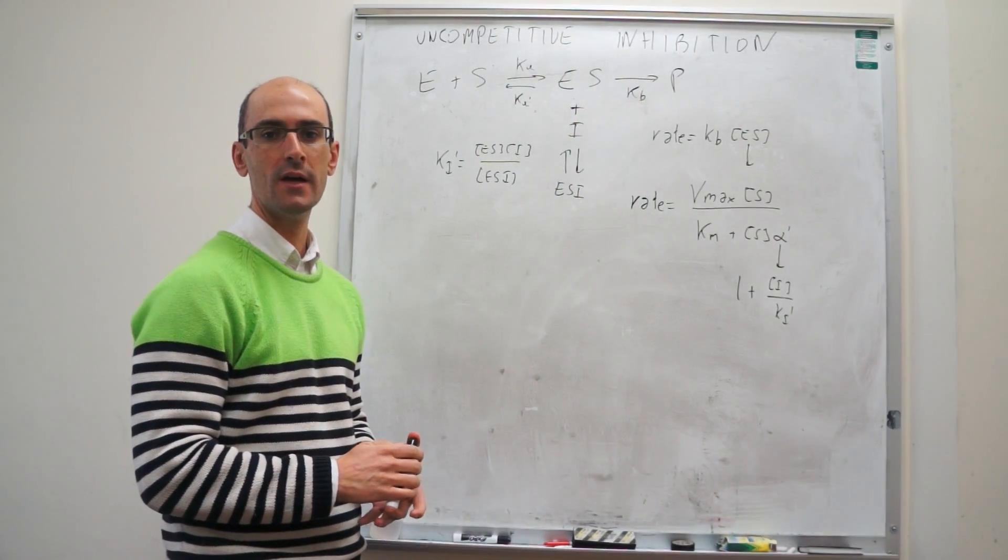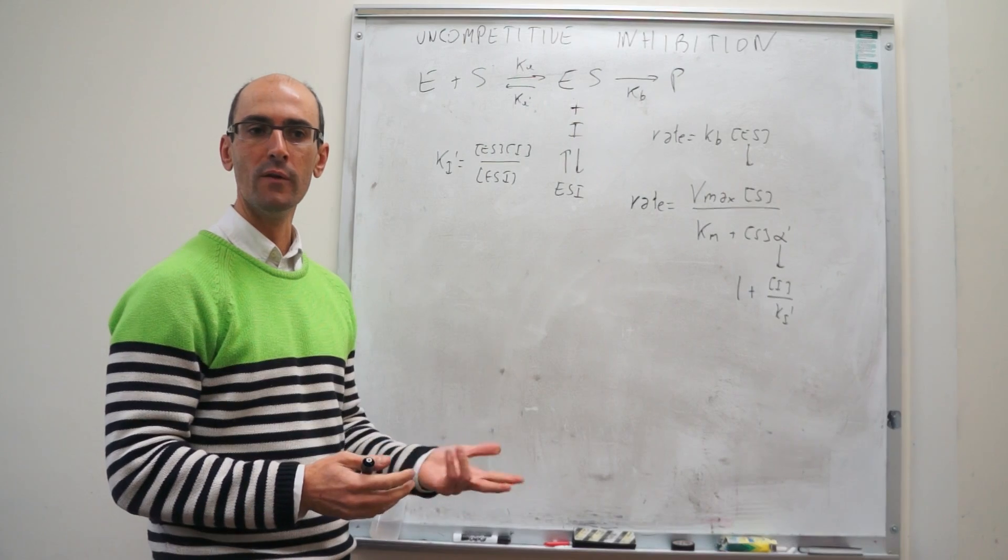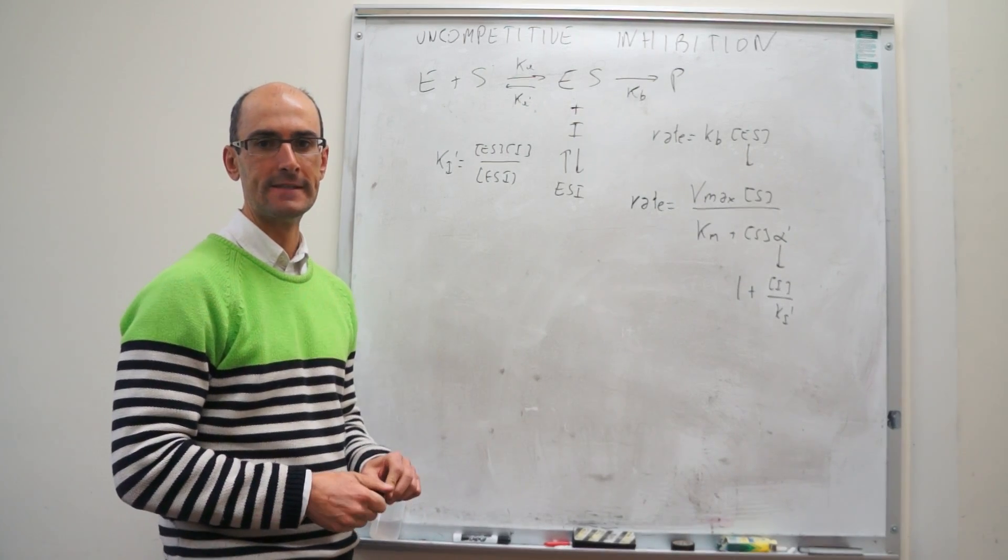So this is uncompetitive inhibition, and with this we finish all three types of inhibition that we're going to see this semester.